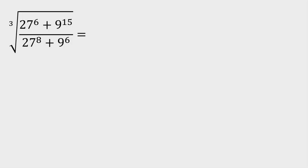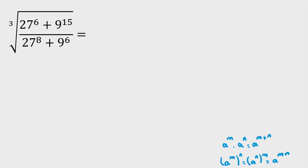Before that, you should know two things about exponent rules. Let me write here. First: a to the m, to the n, equals a to the m times n. Second: a to the m times a to the n equals a to the m plus n. And if you divide a to the m over a to the n, it equals a to the m minus n. These are so basic and you should memorize.